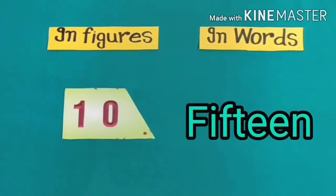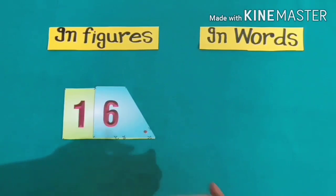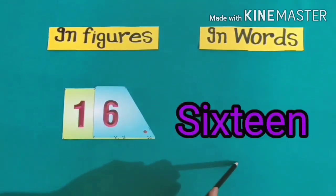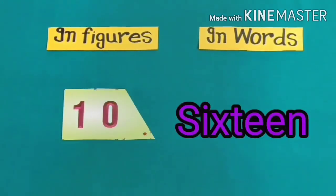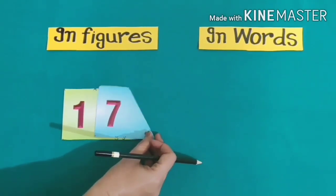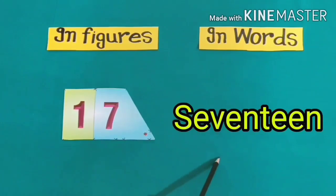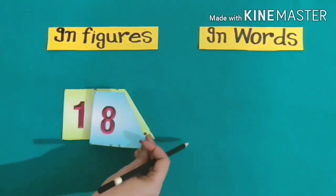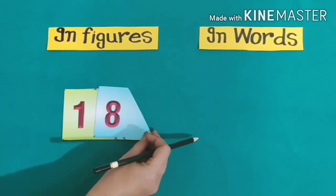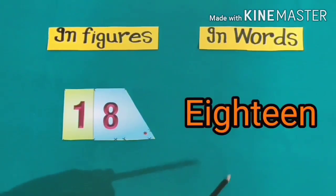10 + 6 = 16, in words: sixteen. 10 + 7 = 17, we will write seventeen in words like this. 10 + 8 = 18, we will write it in words like this: eighteen.